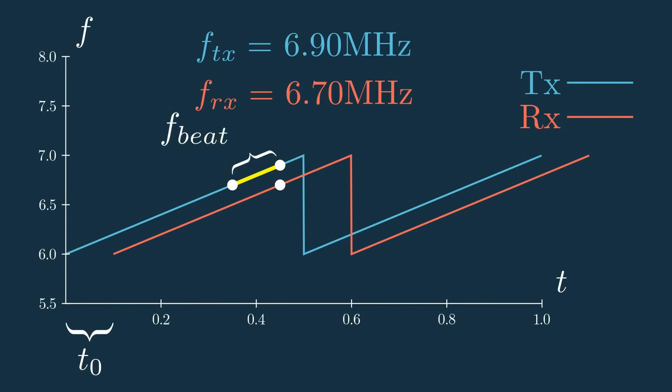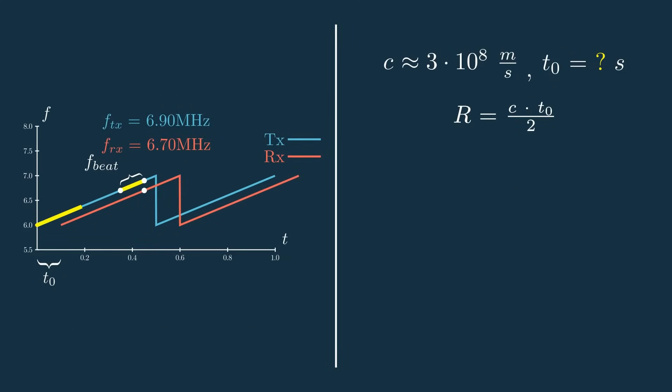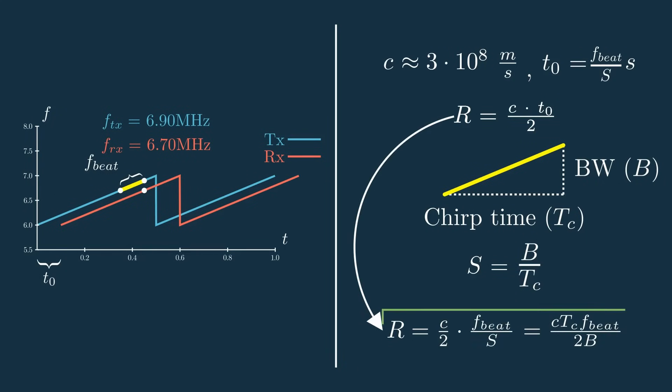So, if we wanted to convert that frequency difference, or beat frequency, to a time difference, we could find the slope of the sawtooth's chirp by dividing its bandwidth by its chirp time, and then we can take the section of the slope that we care about, or this beat frequency, and divide it by the slope to get the time shift. This time shift can then be plugged straight back into that range equation to get the target's range.